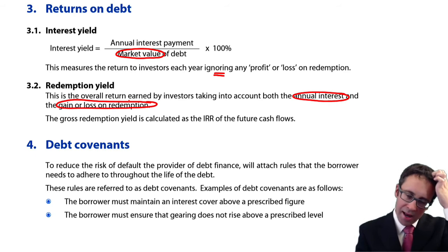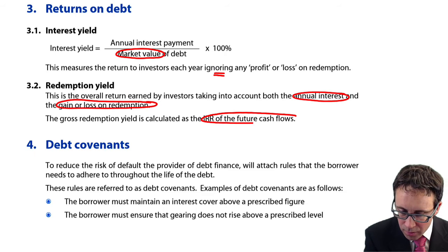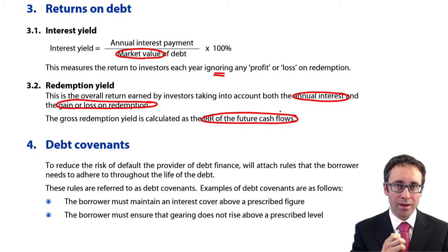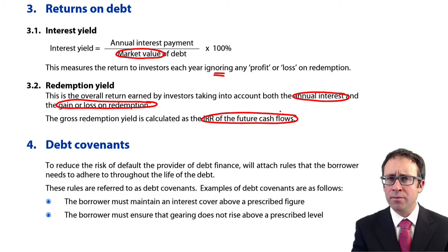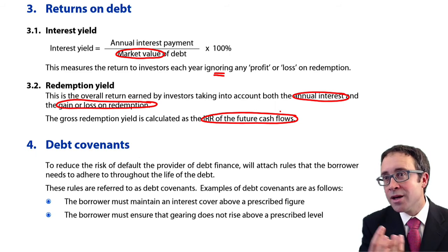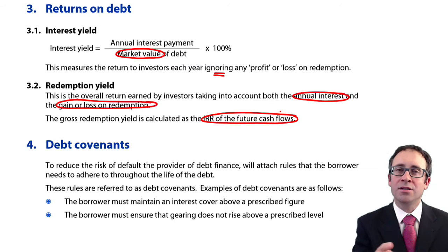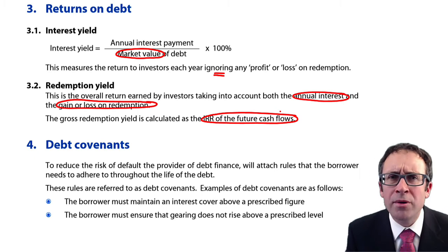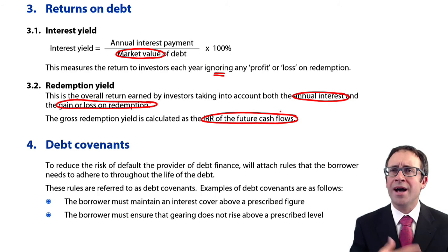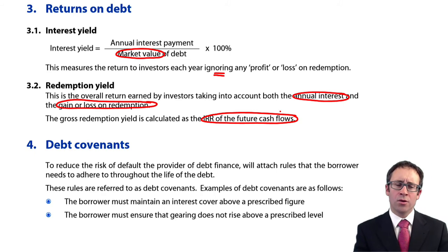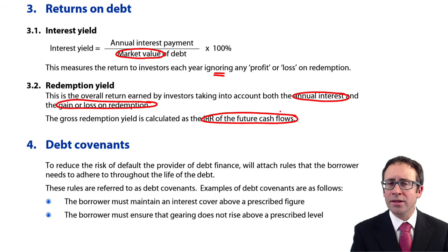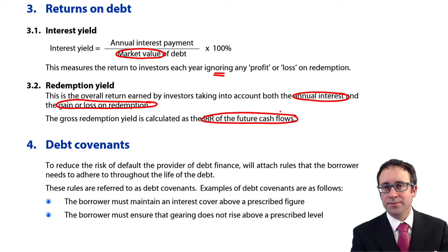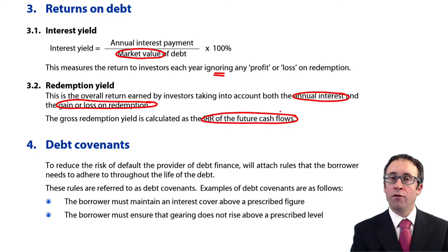You've seen this already in F1. The way we work out the gross redemption yield is to calculate the IRR of the future cash flows. You'll have done that in F1 looking at redeemable debentures. What you might find is that it will be examined by working out the gross redemption yield on a convertible debenture — possibly as part of your weighted average cost of capital calculations from F2. I'll cover that in a later video when we look at convertible debentures.